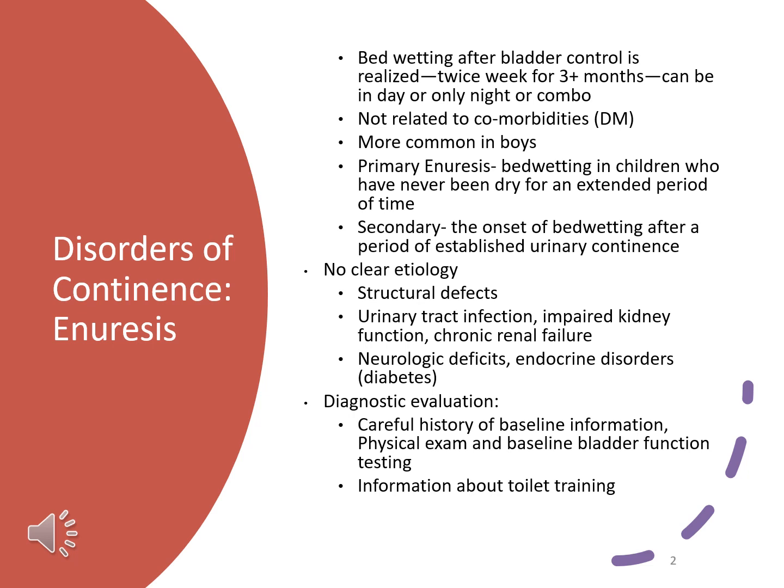This does seem to be more common in boys over females. The most important thing to rule out in these kids is making sure there's no comorbidity — like diabetes or a urinary tract infection — because one of the most indicative signs of a UTI in children is incontinence in a child who's already established control of their bladder.